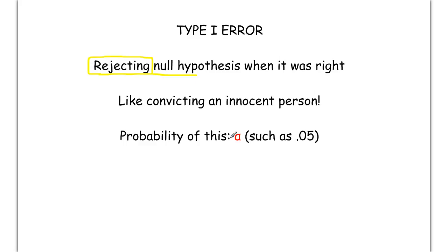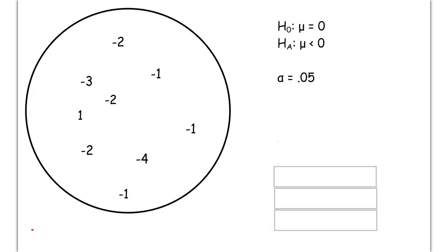Now, the probability of a type 1 error is represented by the Greek letter alpha. We've already talked about alpha values. Typically, it's going to be something like 0.05 or 0.01. And that alpha value, again, represents the probability of a type 1 error. So let's play that random sampling game again and see how we do.